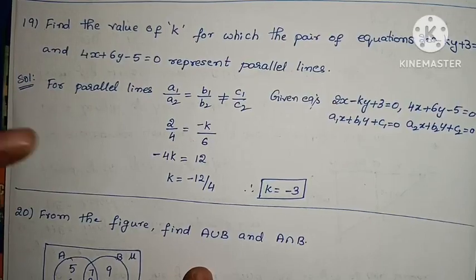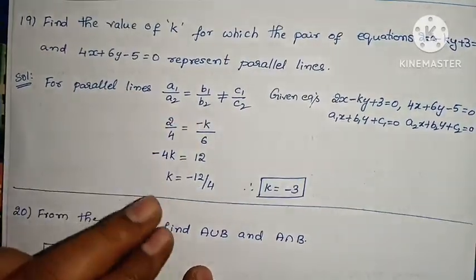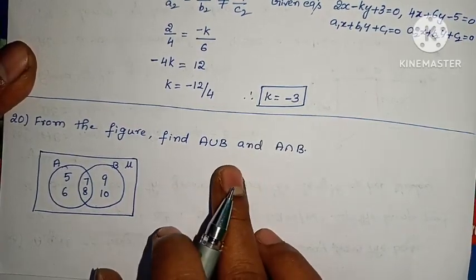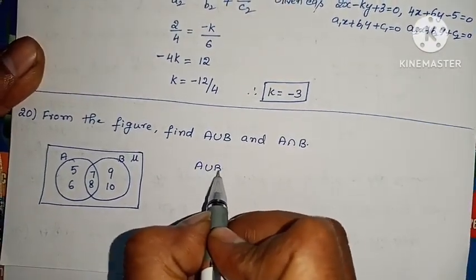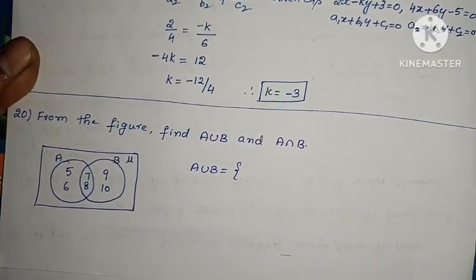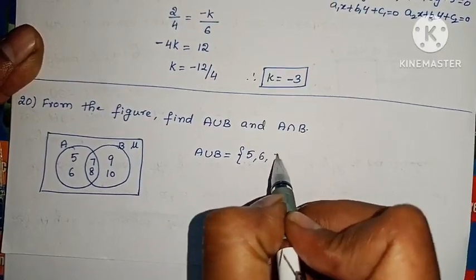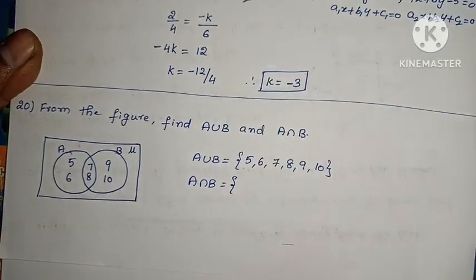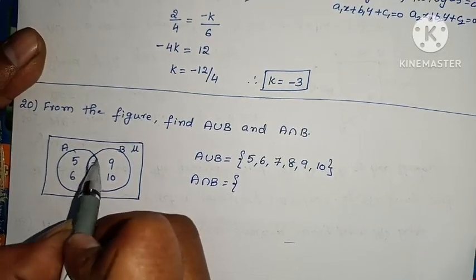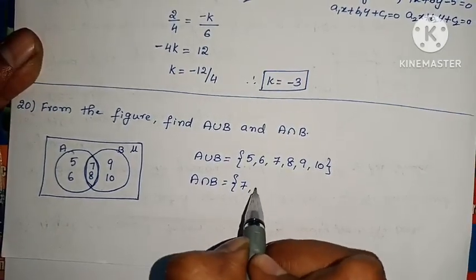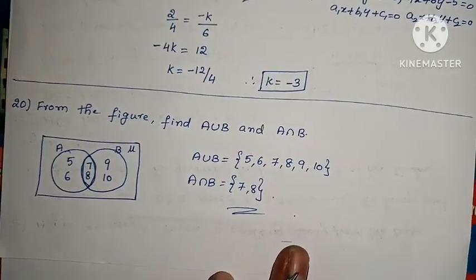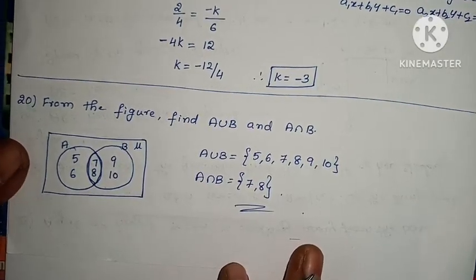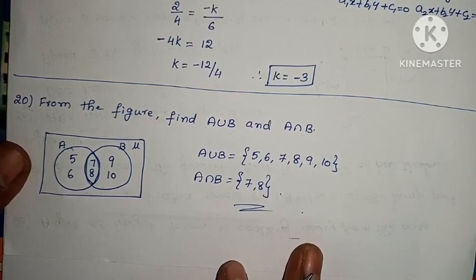Finally, from the figure find A union B and A intersection B. A union B is the combination of all elements: 5, 6, 7, 8, 9, 10. A intersection B contains only common elements: 7 and 8. Problem complete. Section 2 is now complete. Next video will cover section 3. If you like this video, subscribe to my channel. Thank you.